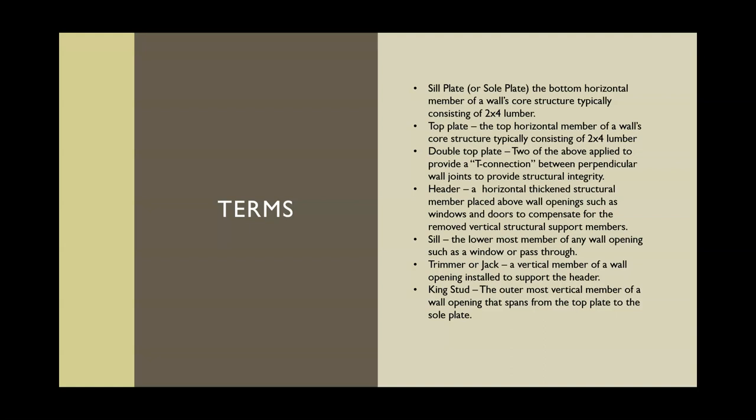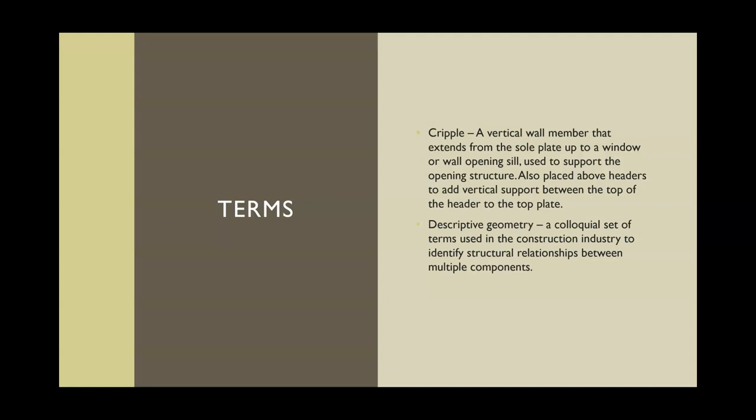A header is a horizontal, thick structural member placed above all openings such as windows and doors, to compensate for the removed vertical structural members. You'll see more of how that's applied a bit later. A sill is the lowermost member of any wall opening such as a window or pass-through — just about any lower member of a framing construction is considered a sill. A trimmer or jack is a vertical member of a wall opening installed to support the header. A king stud is the outermost vertical member of a wall opening that spans from the top plate to the sole plate. A cripple is a vertical wall member that extends from the sole plate up to a window or wall opening sill, used to support the opening structure, and also placed above headers to add vertical support between the top of the header and the top plate.